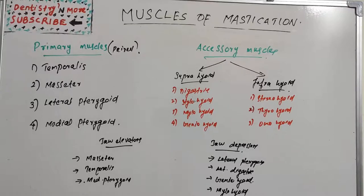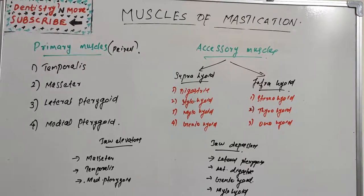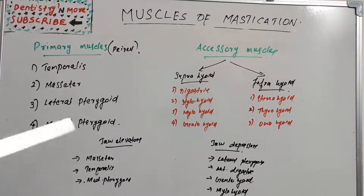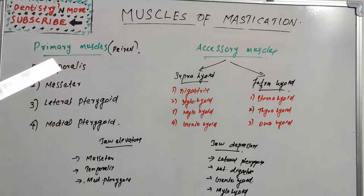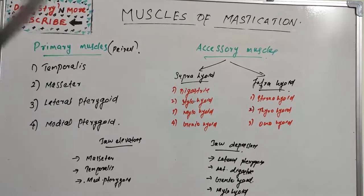Welcome back to another session in dentistry. Today's topic is muscles of mastication — the muscles involved in chewing. They are a group of muscles that help in movement of the mandible during chewing and speech. We study these muscles because they control the opening and closing of the mouth, play a role in the equilibrium created within the mouth, and contribute to the configuration of the face.